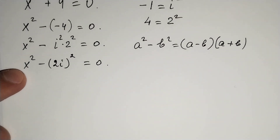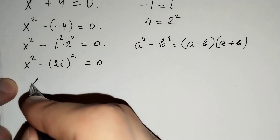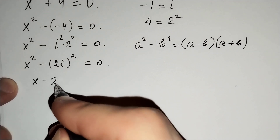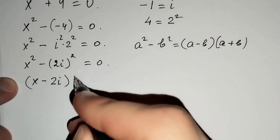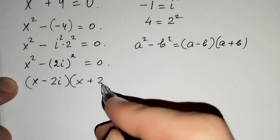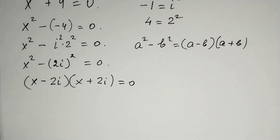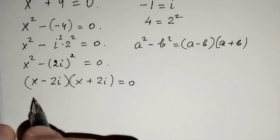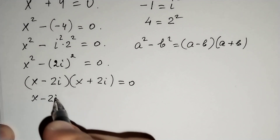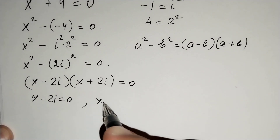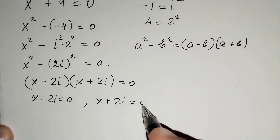Applying that formula, we get (x minus 2i)(x plus 2i) equals 0. For the product to equal 0, at least one of the factors must equal 0, giving us x minus 2i equals 0 and x plus 2i equals 0.